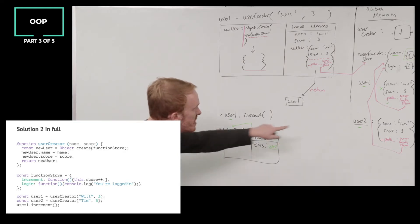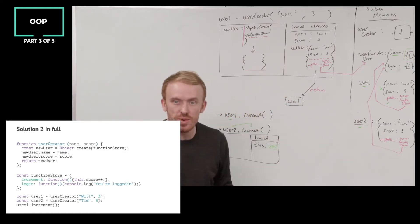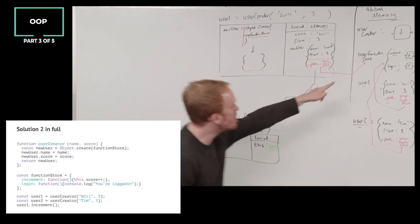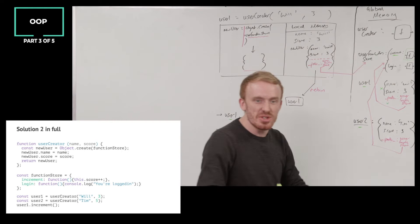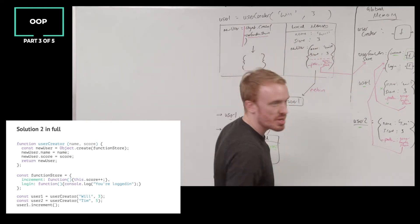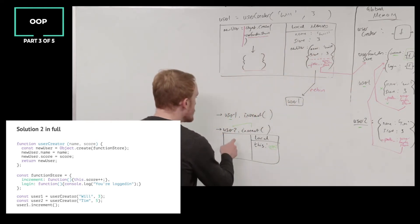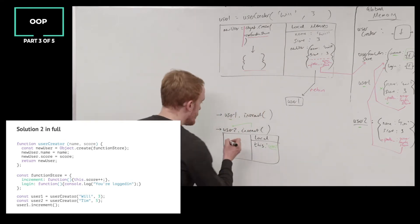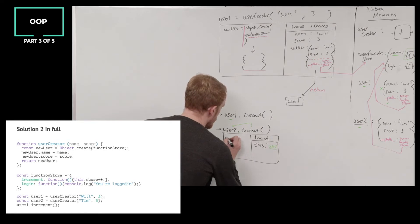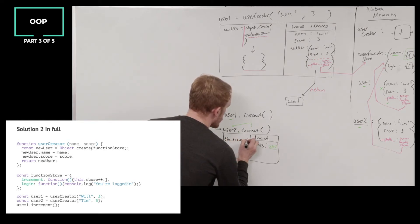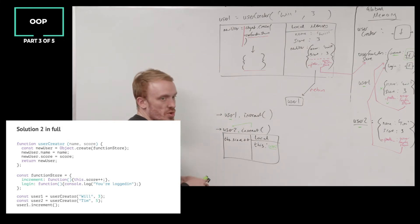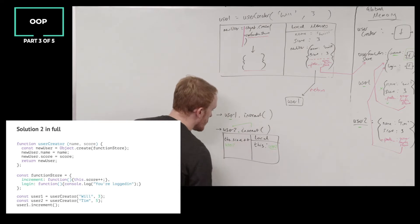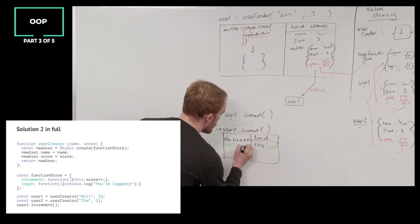The this keyword by default — here's our fundamental rule — always points to the relevant object to the left-hand side of the dot on which I'm calling this function. I'm calling increment on user2, and therefore inside the execution context, this will be automatically bound to user2. So this.score++ evaluates to user2.score++.